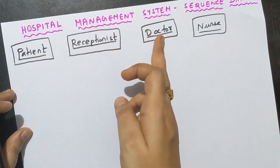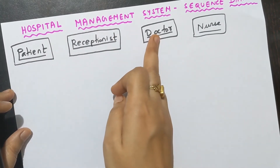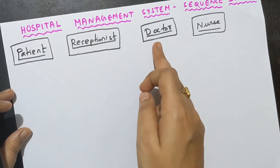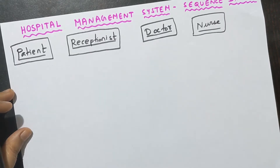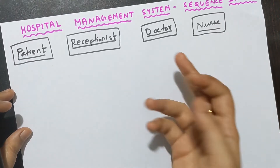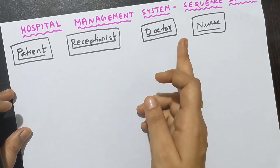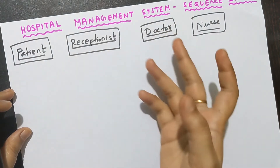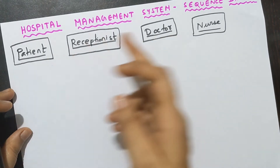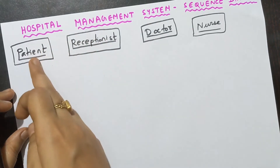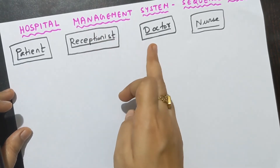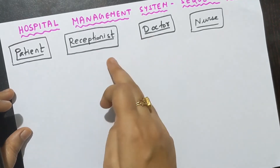The second step is the activation time, because everything cannot happen at the very same time. You go to the hospital at one time, consult the doctor at another time, and get medicines at yet another time. There is a gap between every incident happening inside the hospital. So after drawing the multiple objects, you need to draw the second step — the activation time — and it should be in the correct order.